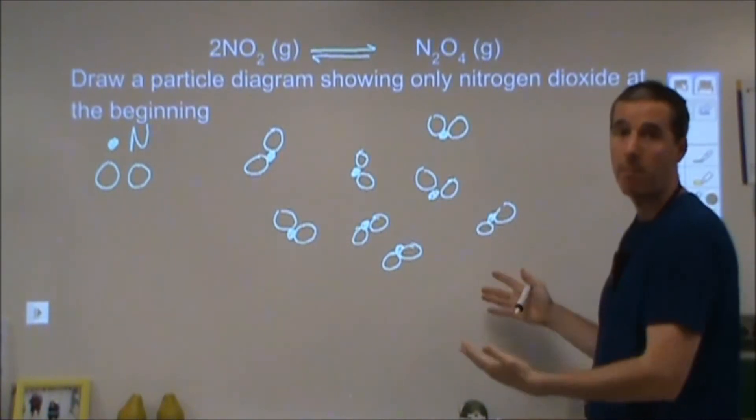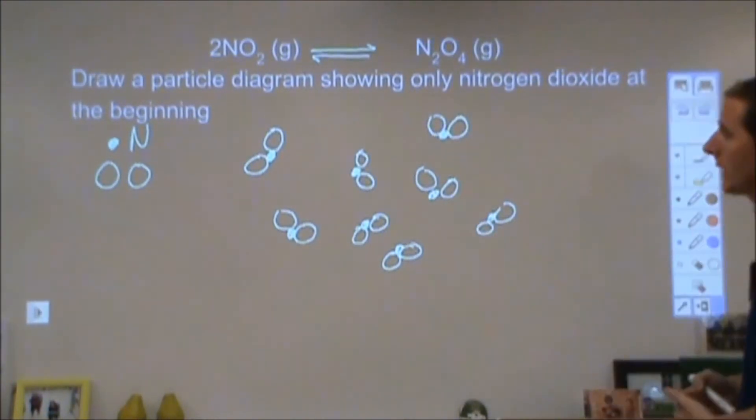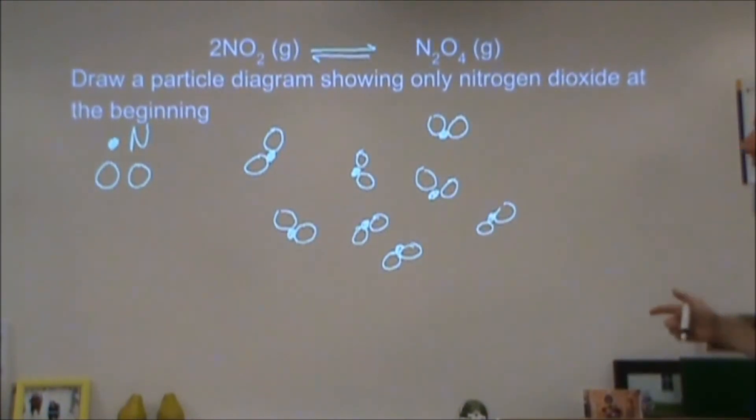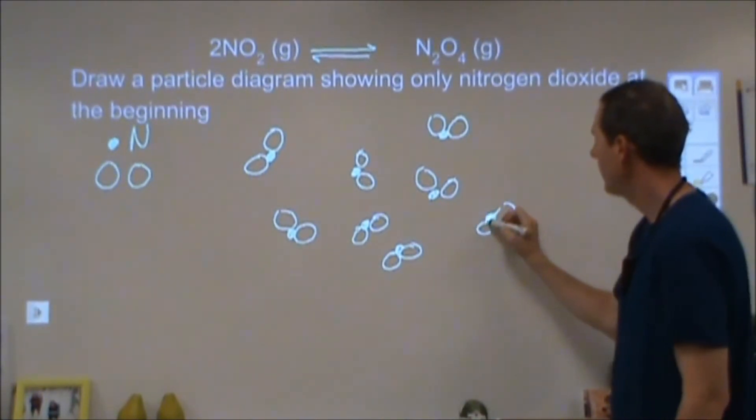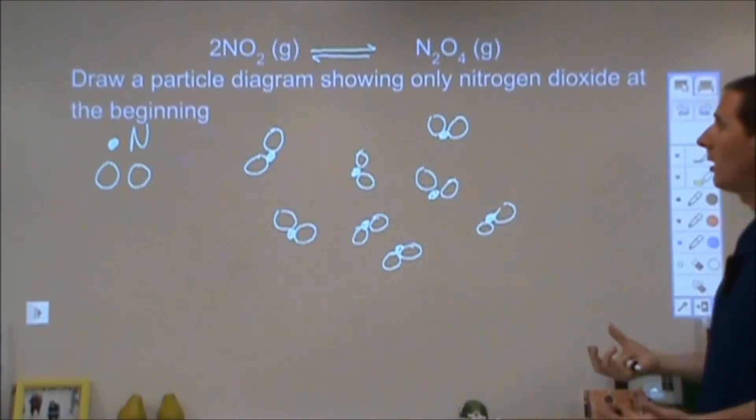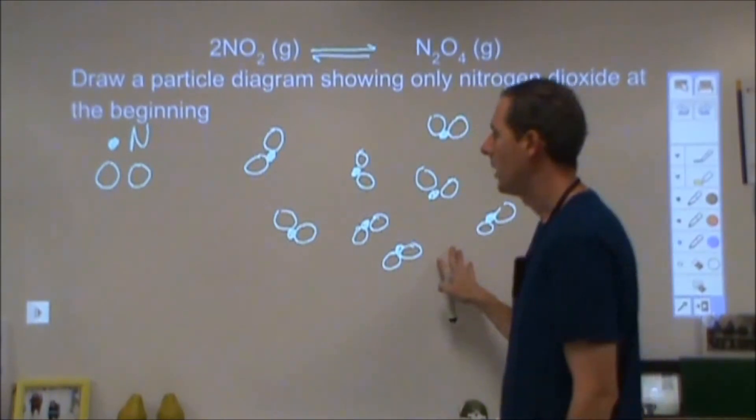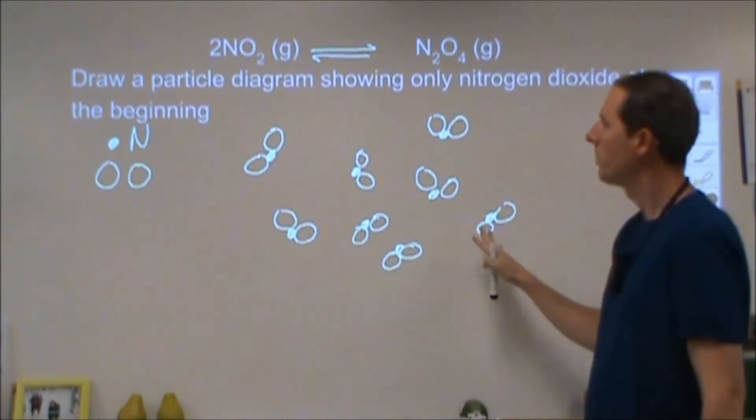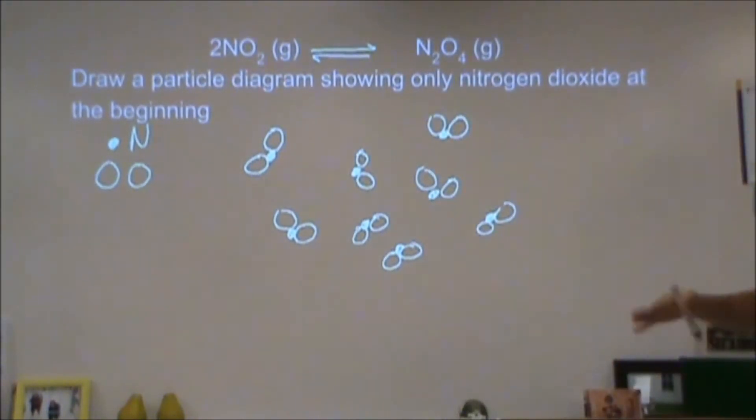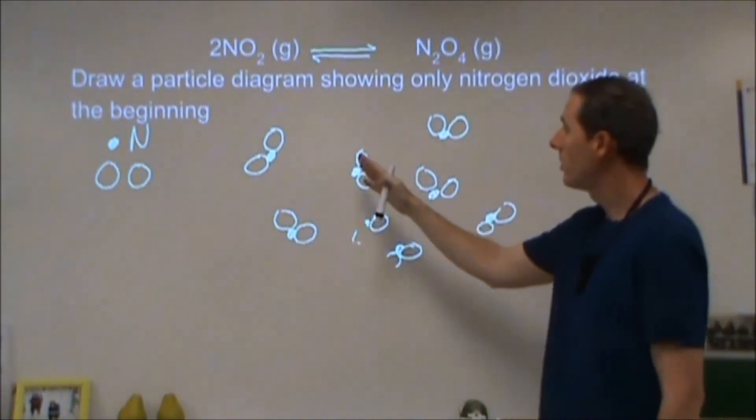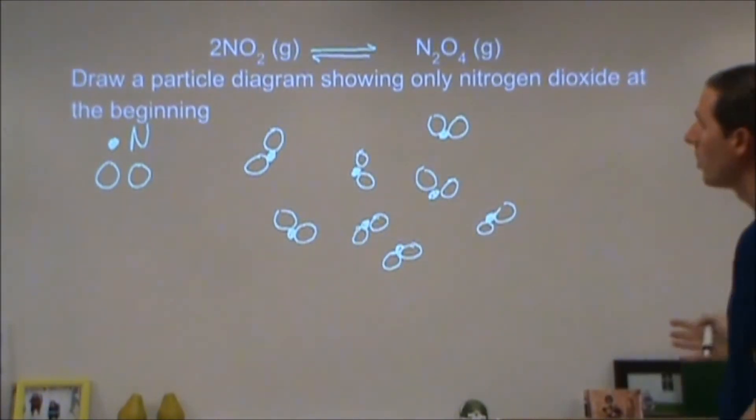I'm going to assume that my box here is one liter in size, and I'm also assuming that every time I draw a molecule, that's one mole of that particular molecule. Obviously, I can't draw a mole of molecules on here, I'd be here all day. But we can scale this up and say this is eight moles within one liter. So we have eight molar NO2 at that point.